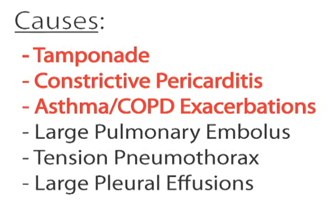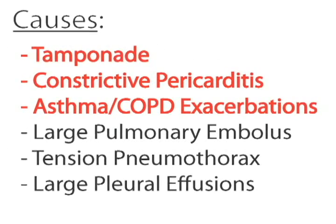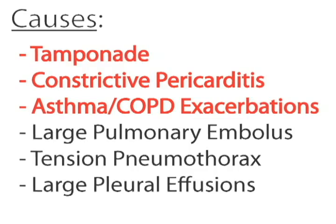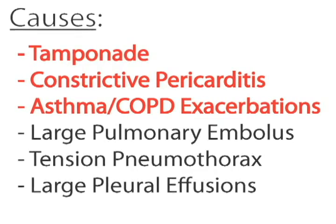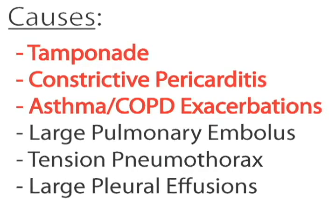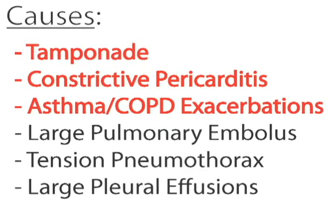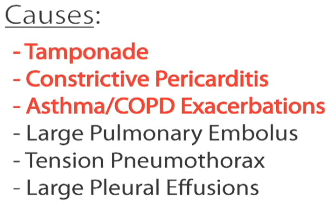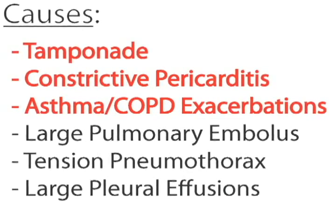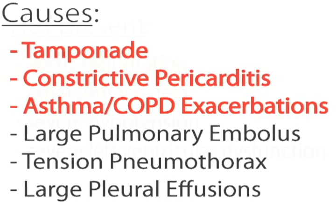Along with tamponade, Pulsus Paradoxus can be seen in some patients with constrictive pericarditis, during asthma or COPD exacerbations, and less commonly in other clinical scenarios.